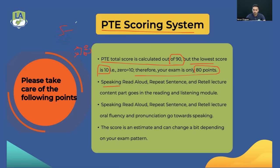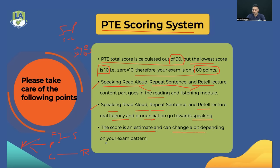All modules are interconnected. Speaking gives you points in reading and listening; writing gives you points in reading. Specifically, Read Aloud, Repeat Sentence, and Re-tell Lecture are marked on fluency, pronunciation, and content. Fluency and pronunciation points go into speaking, while content points go into reading for Read Aloud, and into listening for Repeat Sentence and Re-tell Lecture. The scores I'll show are estimates and can vary slightly depending on your exam pattern.